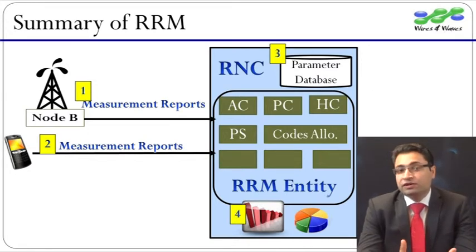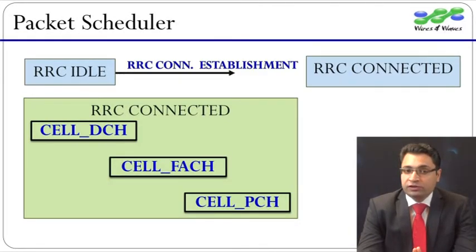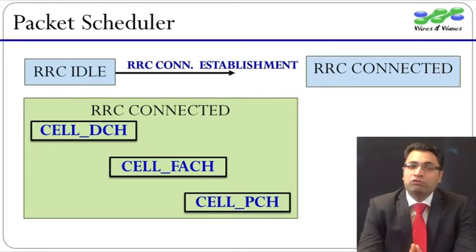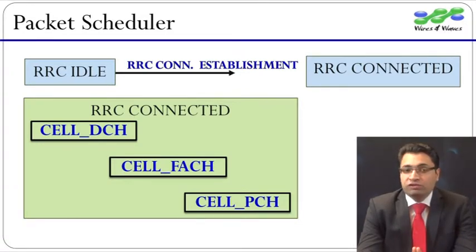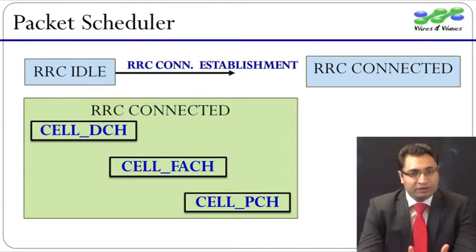Let us discuss some concepts about packet scheduling. The packet scheduler for Release 99 channels is located at the RNC. The RNC communicates with UEs with the help of a one-to-one connection called the RRC connection. When a UE does not have an RRC connection established with the RNC, it is said to be in RRC idle mode. After successful RRC connection establishment, it comes to RRC connected mode.